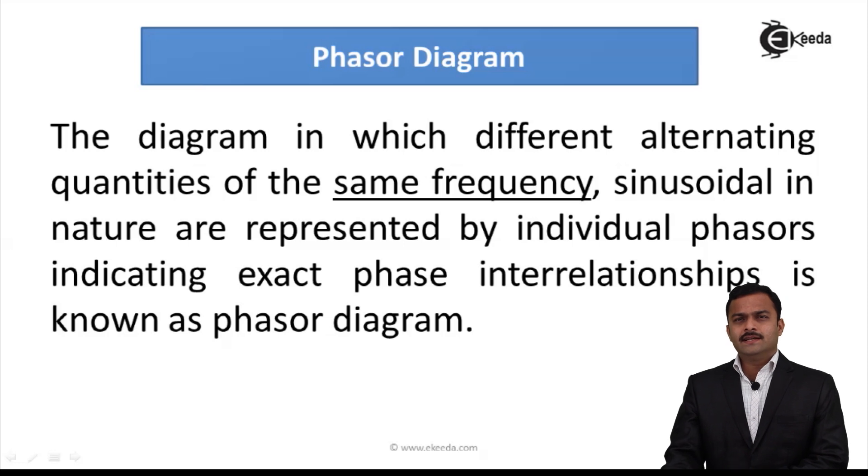So let us see what the phasor diagram is. The diagram in which different alternating quantities of the same frequency, sinusoidal in nature, are represented by individual phasors indicating exact phase interrelationship is known as phasor diagram. All the quantities can be shown on the same diagram, but for that to achieve one important point is it should have same frequency. So it is very important so that we can avoid drawing waveforms, writing equations, and calculation will become very easy.